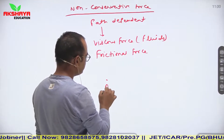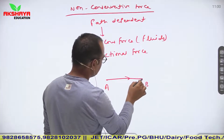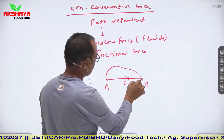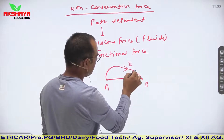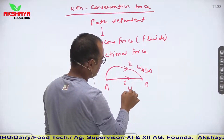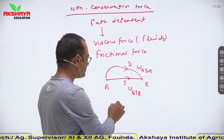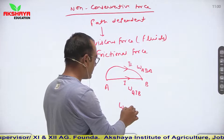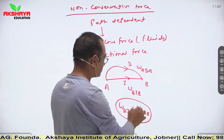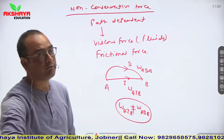If I again consider a particle traveling from A to B via different paths, then work done by each path is different. Work done W(A to B) via path one and via path two are both different. Such a force is known as a non-conservative force. So these are the two types of forces.